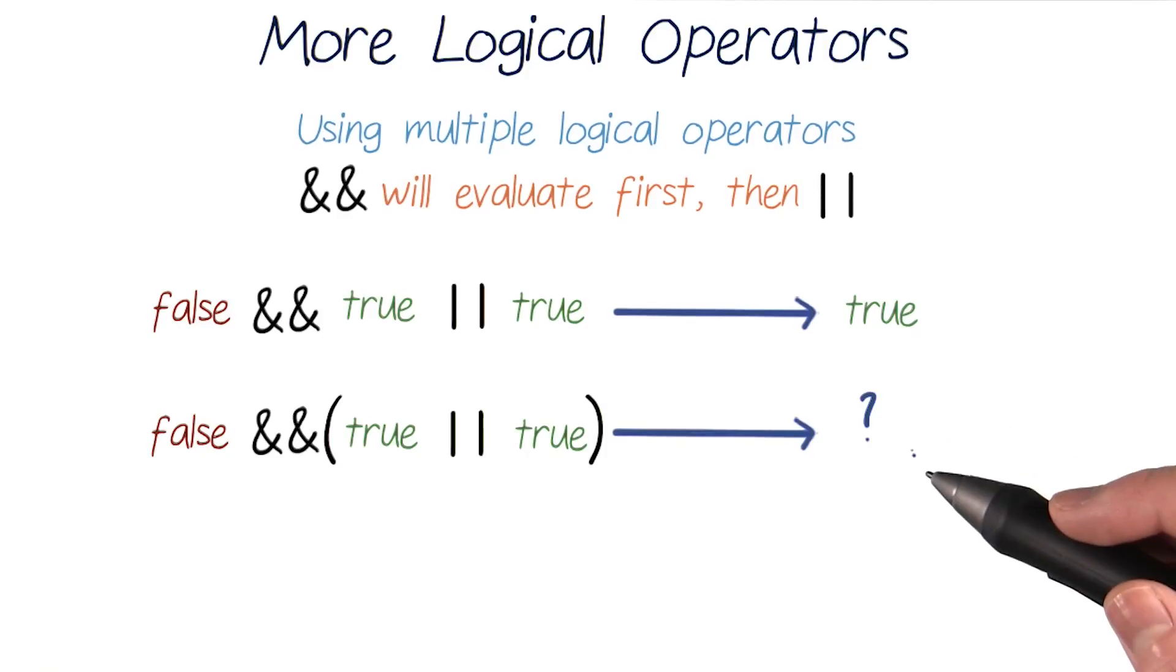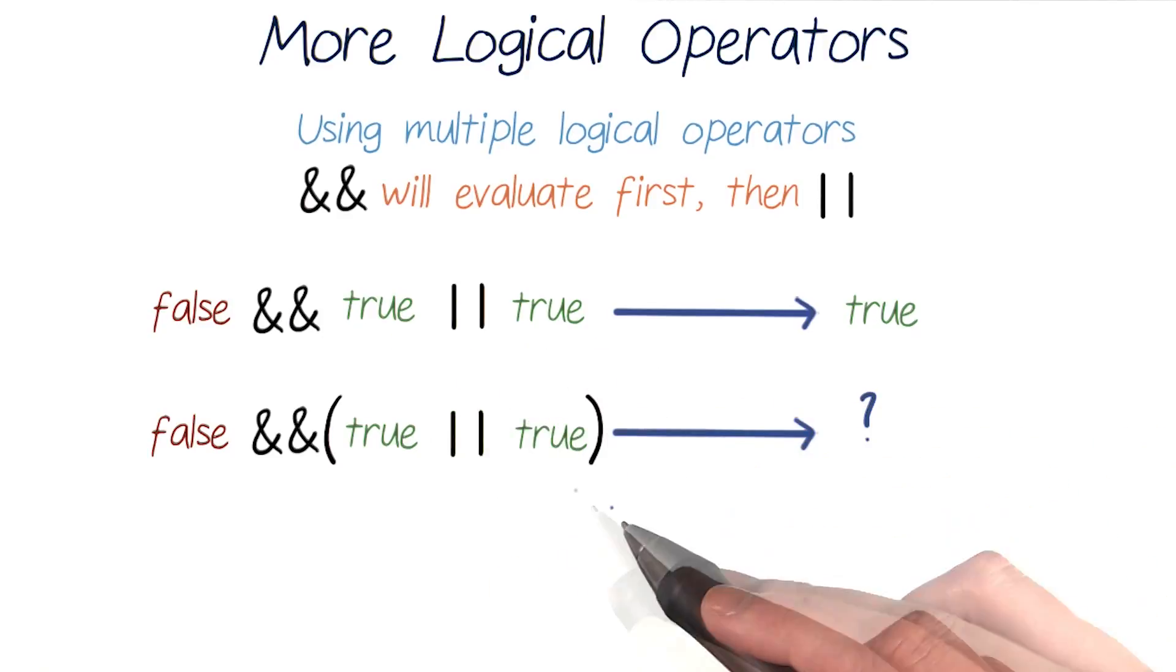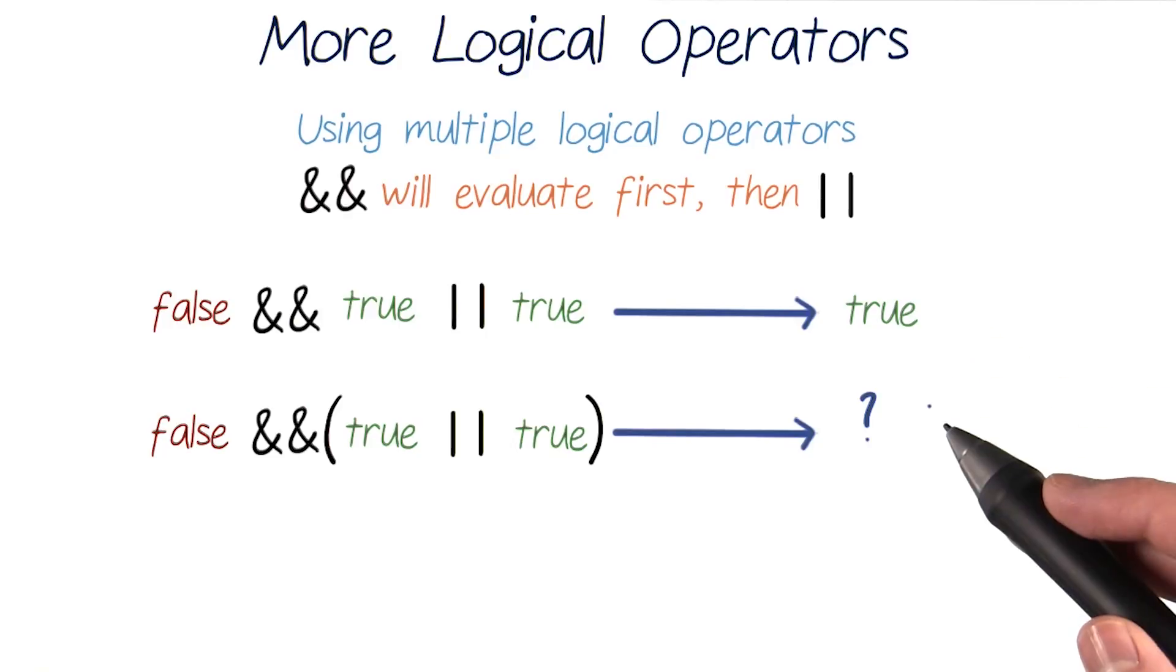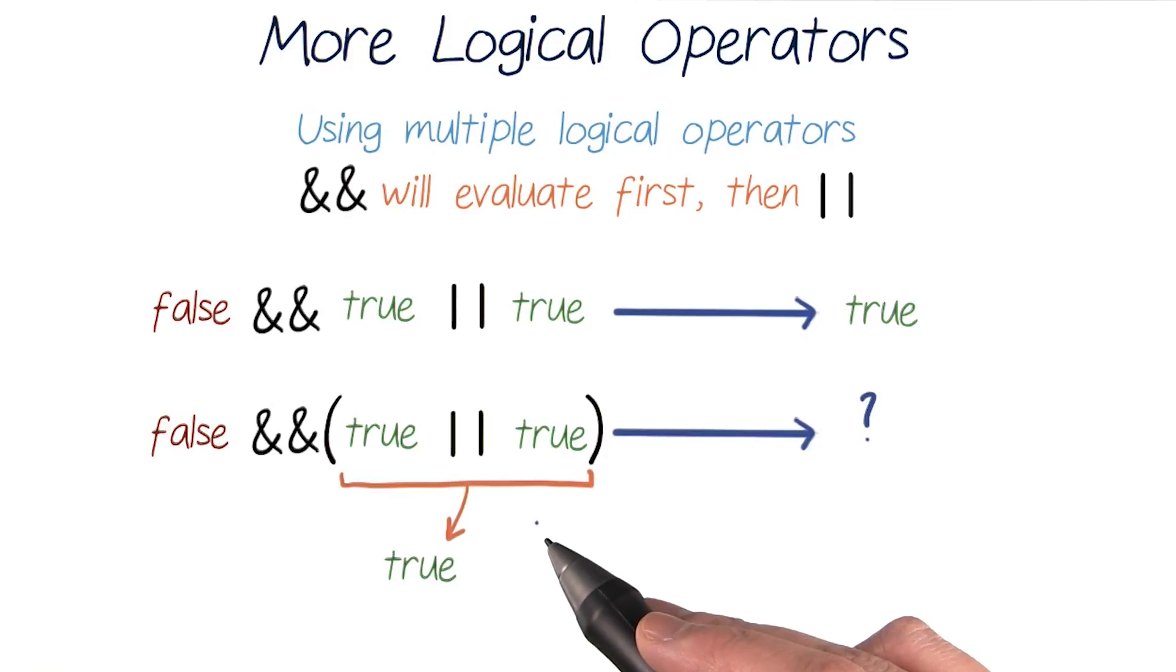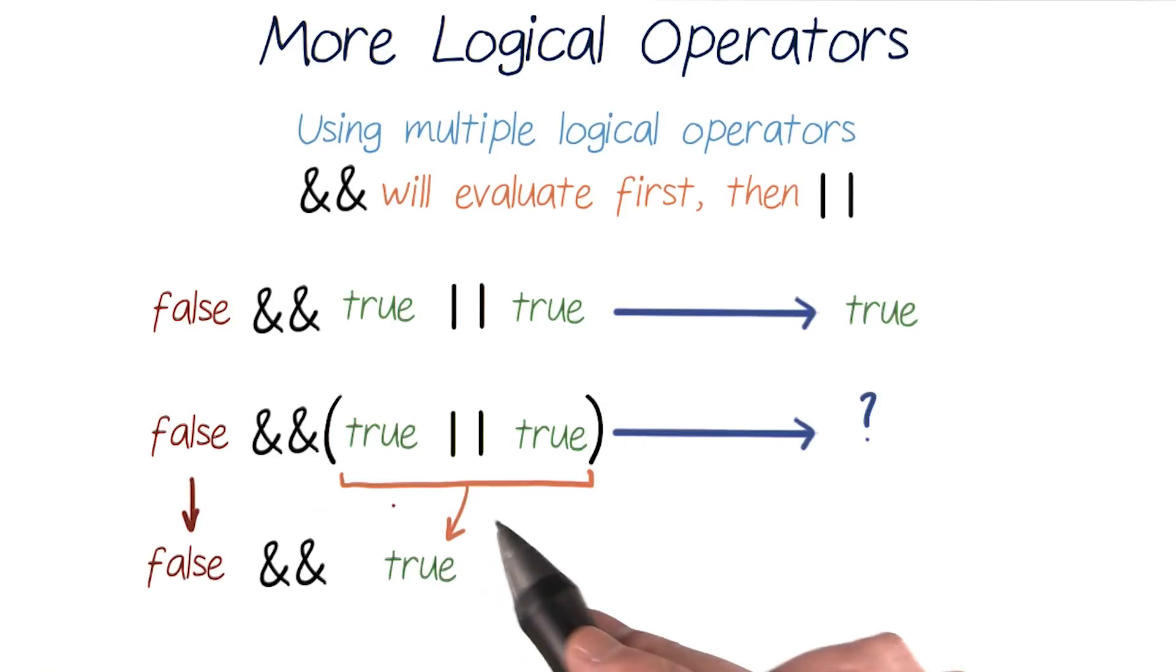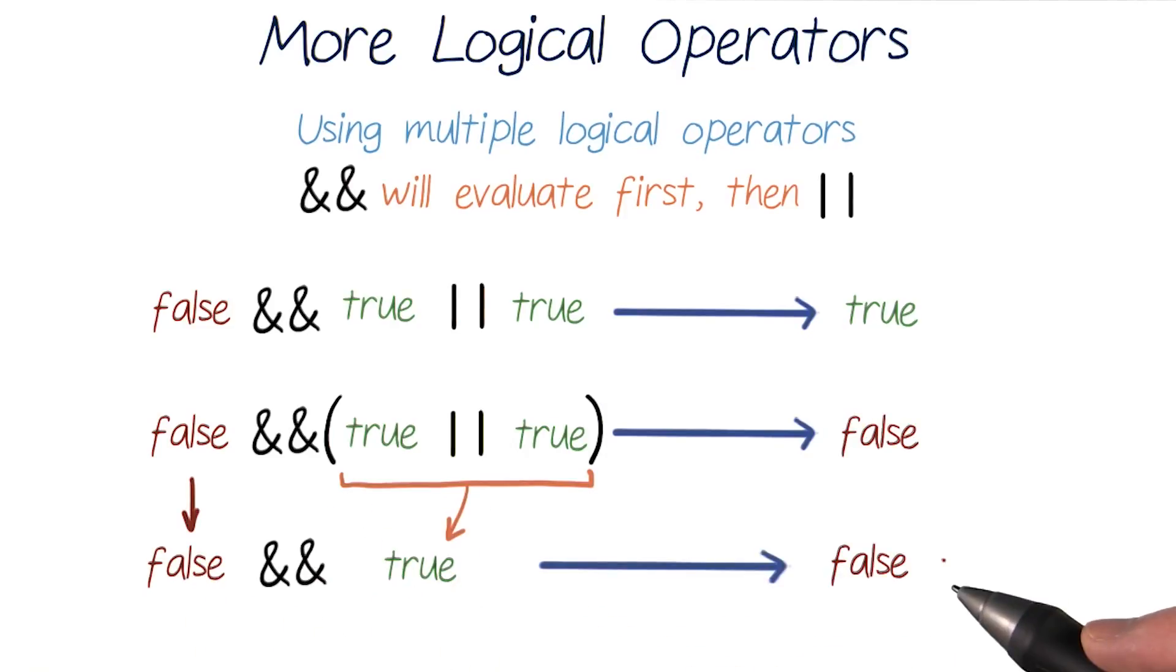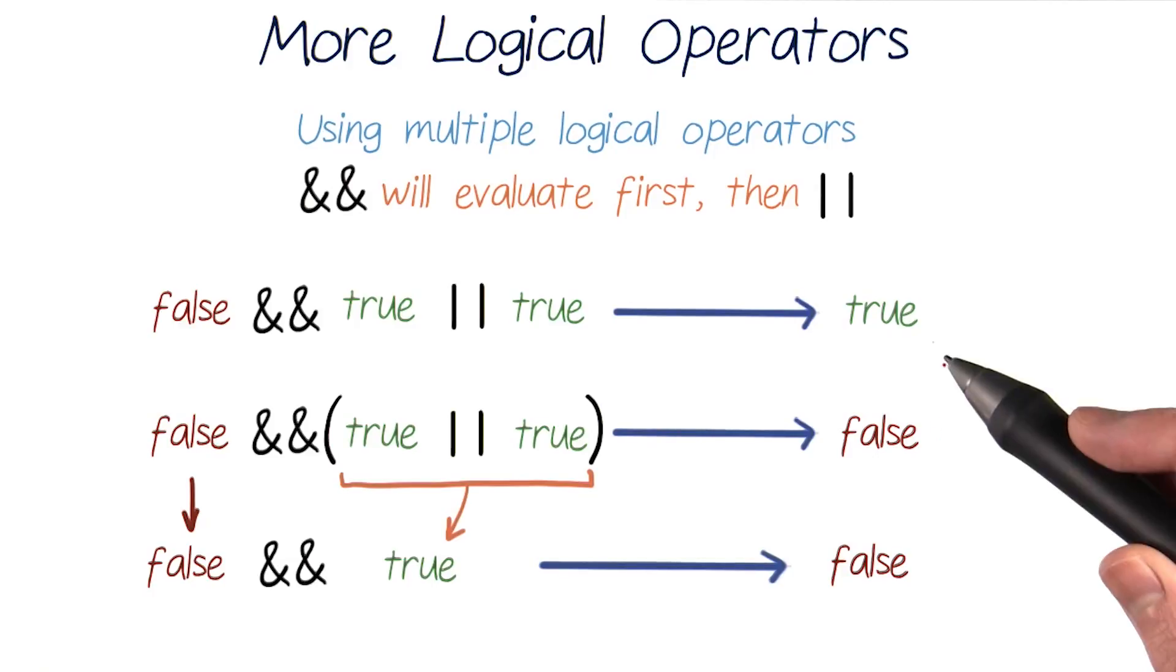But what if we wanted to evaluate the or combination first, the true or true part? To override the order of operations and make this or combination evaluate first, we can surround that part of the expression in parentheses. Java will always execute code in parentheses before anything else. So this same check but with parentheses around the or will be read differently. In this case, Java looks at what's in the parentheses first, true or true. And since at least one of these two conditions is true, in fact both of them are true, this or combination evaluates to true. And these conditions simplify to false and true. Because one of these conditions is false and they're combined with an and, this whole expression evaluates to false. So even though these two expressions look very similar, the order of operations makes a difference.